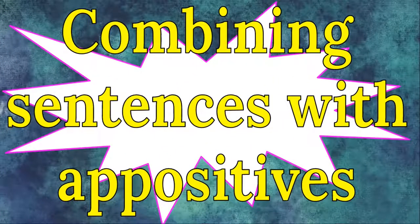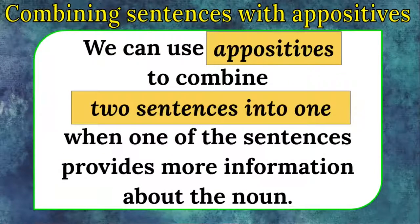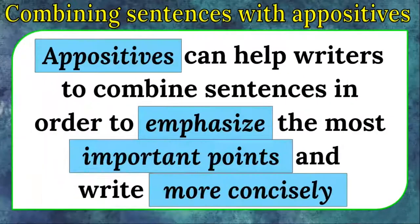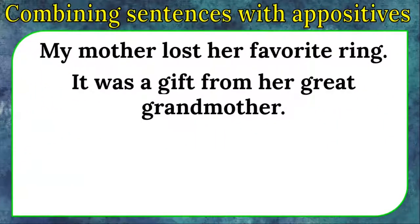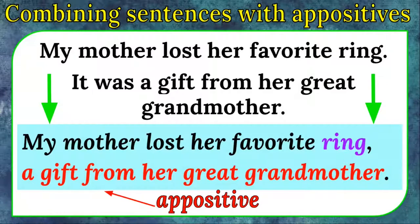Let's combine sentences with appositives. We can use appositives to combine two sentences into one when one of the sentences provides more information about the noun. Appositives can help writers combine sentences in order to emphasize the most important points and write more concisely. For example, instead of "My mother lost her favorite ring. It was a gift from her great-grandmother," we can say: "My mother lost her favorite ring, a gift from her great-grandmother." The appositive is "a gift from her great-grandmother."